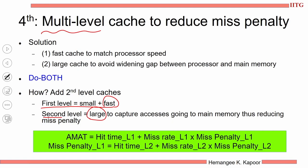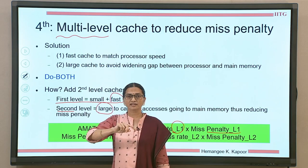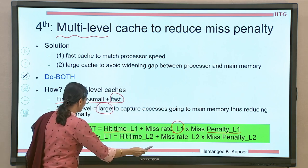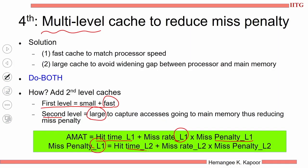When these two caches come into picture, the AMAT formula also changes. Initially AMAT was: hit time plus miss rate times miss penalty — simple three terms. Now with two caches, the AMAT formula changes. You take the hit time plus miss rate of the first level times the miss penalty of the first level. The miss penalty of the first level is now the AMAT of the second level, which is: hit time of L2 plus miss rate of L2 times miss penalty of L2.